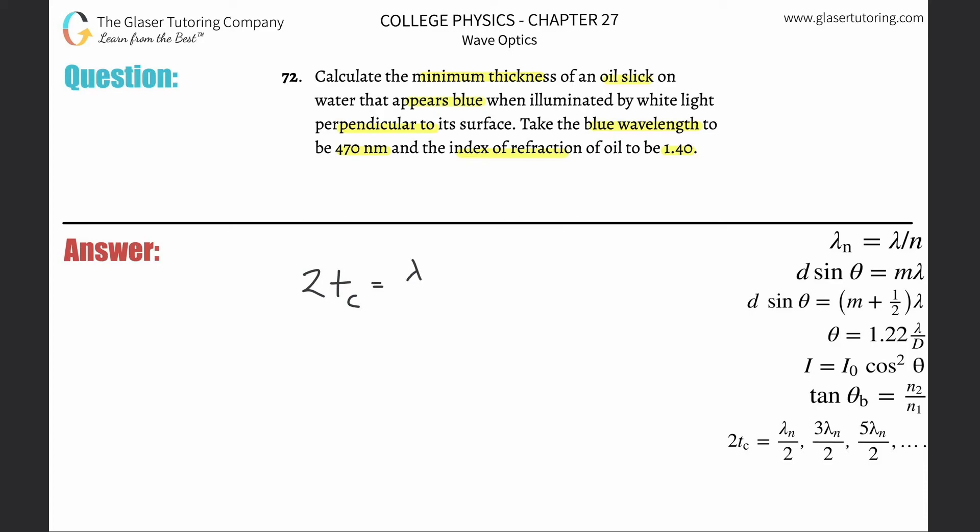If you think about all these as different formulas—this is one formula, it could also look like this, this could be three lambda n over two—we need to find the minimum thickness. The minimum thickness would mean that I want the lowest value over here on the right hand side, because the thickness is equal to this. Notice in this case there's a one half coefficient.